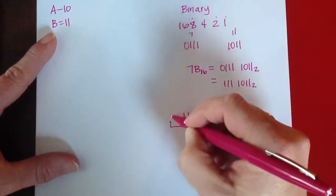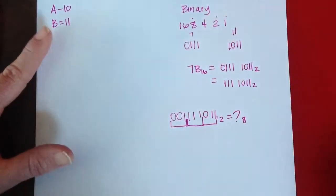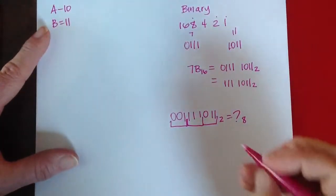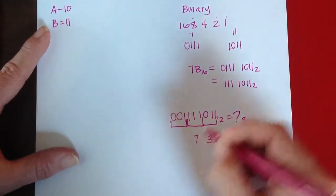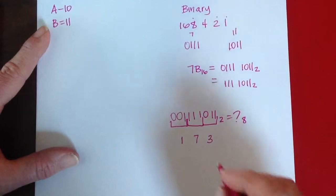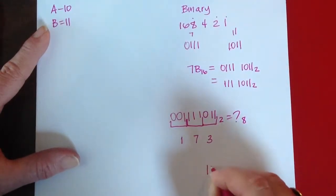And so we can make some place-holding 0s in front. This is the number 3, this is the number 7, and this is the number 1. So that becomes 1, 7, 3, base 8.